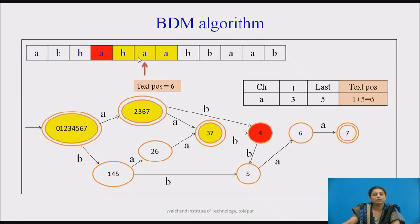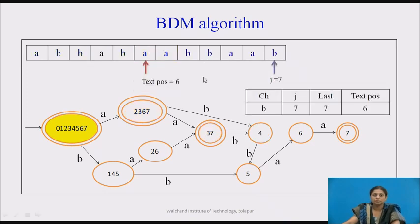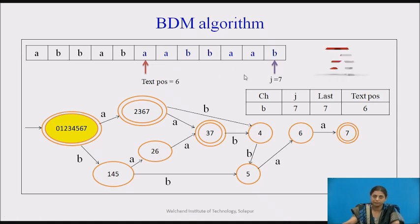We now move to the new window starting at text position 6. The next 7 characters from this position will be processed. We start from the right again: j is reset to 7, 'last' is reset to 7, and the current character is 'b'. Pause the video and try to trace the transitions to find out whether the pattern is found.